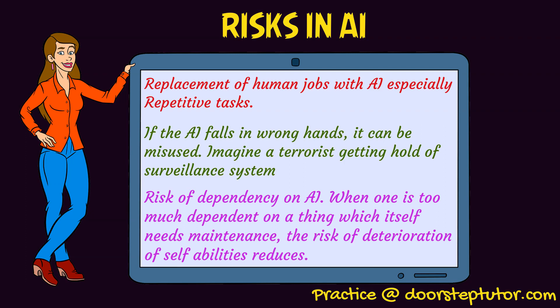In 1964, Bobrow made an AI program called STUDENT to solve algebraic problems. The Shakey robot was invented, and a robot with eyes was invented in 1973. AI also beat world chess champion Garry Kasparov. The risks in AI include replacement of humans with AI, especially in repetitive tasks with no personalized experience. When AI falls in the wrong hands it can become a disaster. There is also the risk of over-dependency — when one is too dependent on AI, asking it to turn on lights or the TV, the person will stop doing even basic tasks.